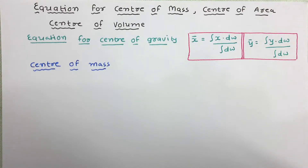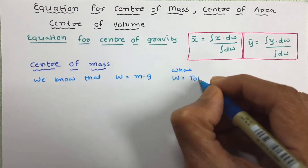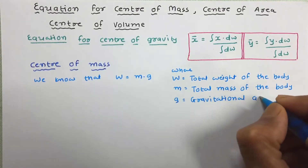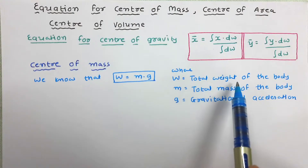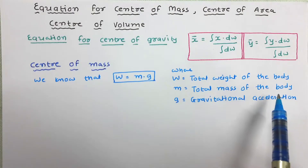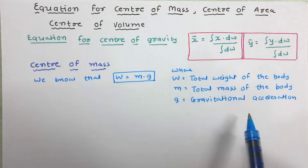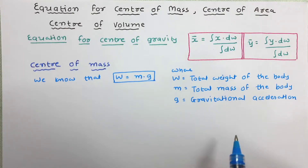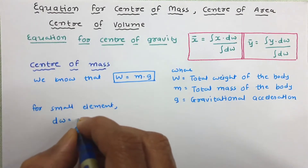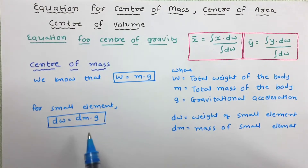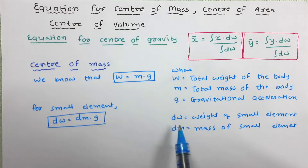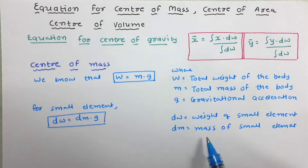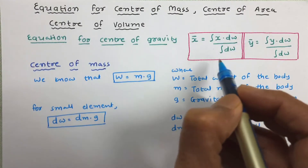Here we will see another approach. We know that w is equal to mg, where w is the total weight of the body, m is the mass of the body, and g is the gravitational acceleration. Now for a small element we can write dw equal to dm into g, where dw is the weight of the small element and dm is the mass of the small element.